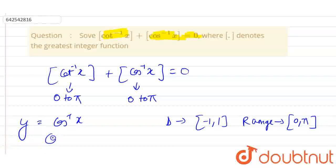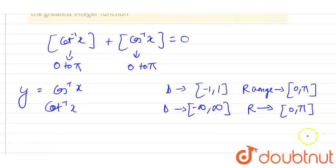Similarly, cot inverse x has domain minus infinity to infinity and the range of this cot inverse x is 0 to π, which is same as the cos inverse x.